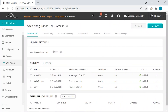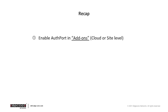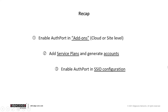We will choose 'hello' here and confirm. So that's all for setting up AuthPort. Now let's do a recap on the three steps. The first step is to enable AuthPort in Add-ons — it can be enabled for the entire cloud at the cloud level, or just for certain sites. The second step is to add service plans and generate accounts linked to these service plans. And the final step is to enable AuthPort in SSID configuration at the site level, where each SSID can have its independent AuthPort setting, and once enabled, you can choose the appropriate captive portal for that SSID.